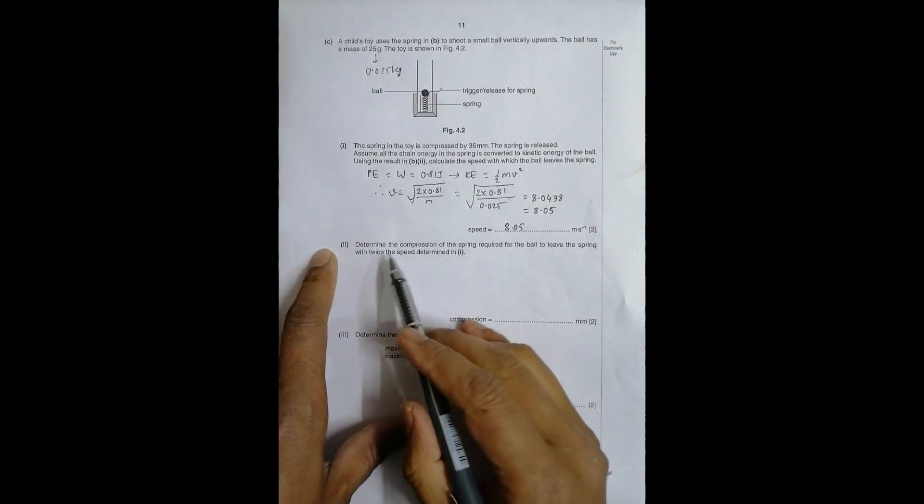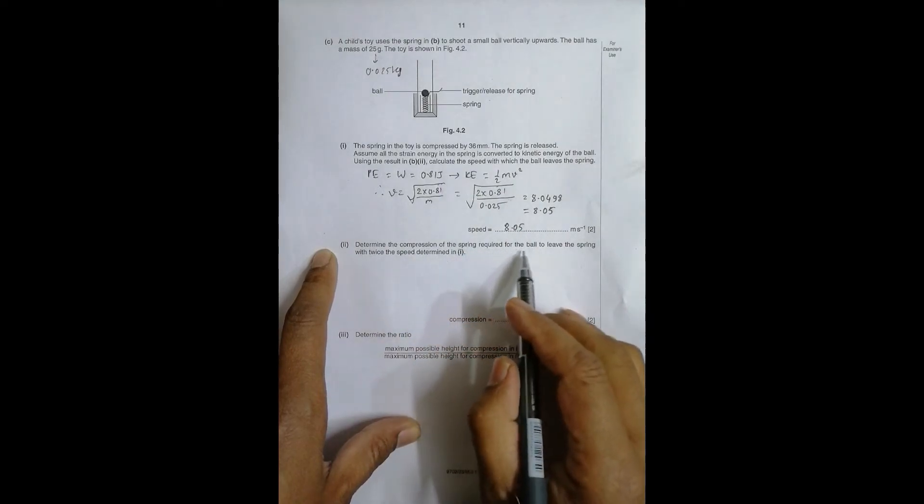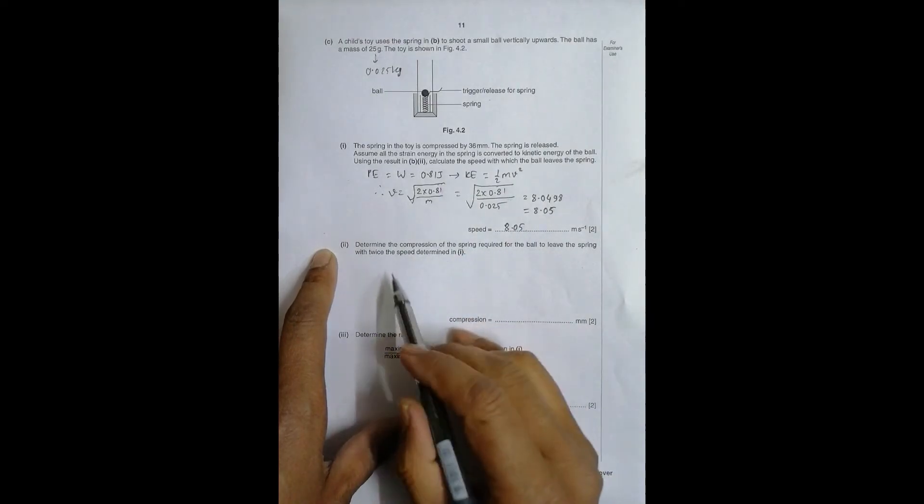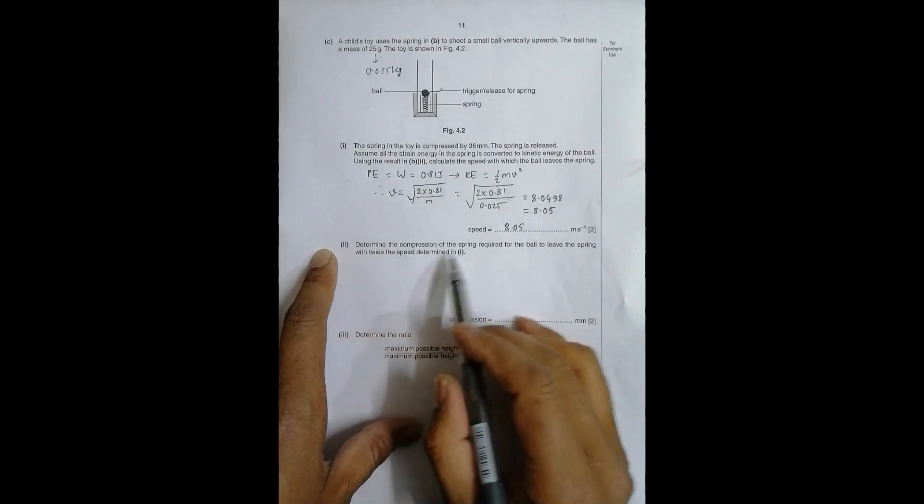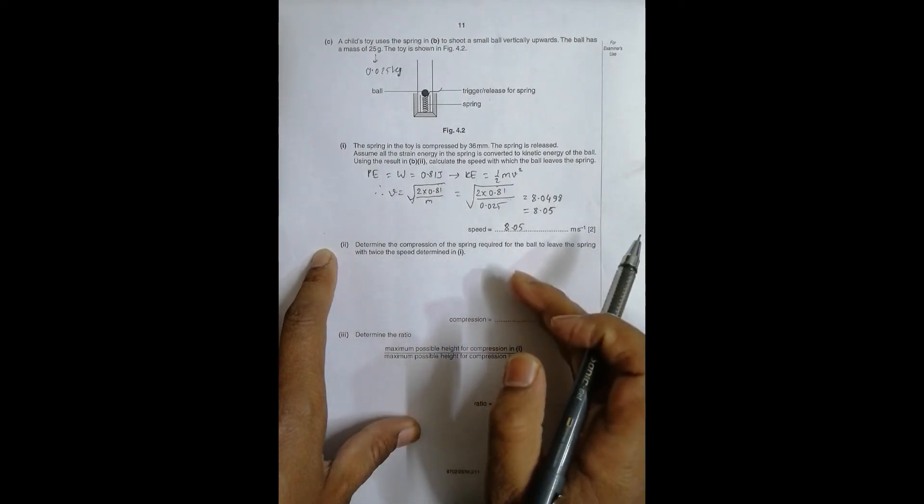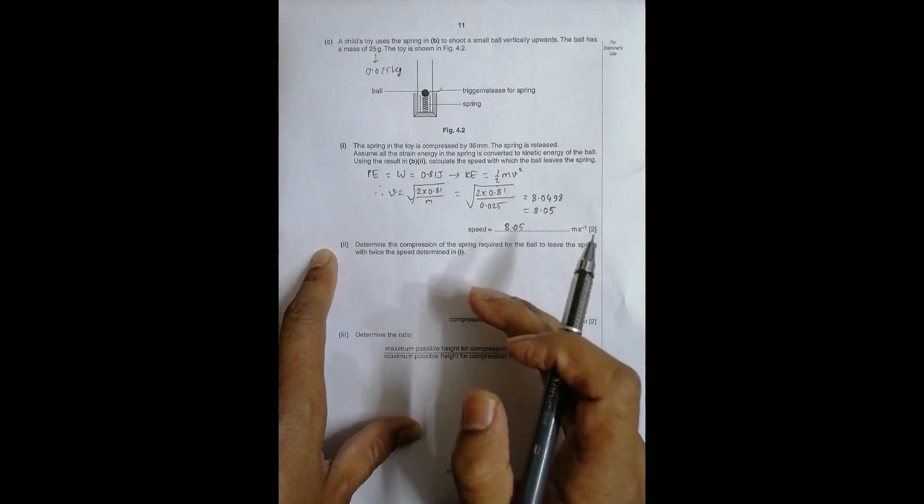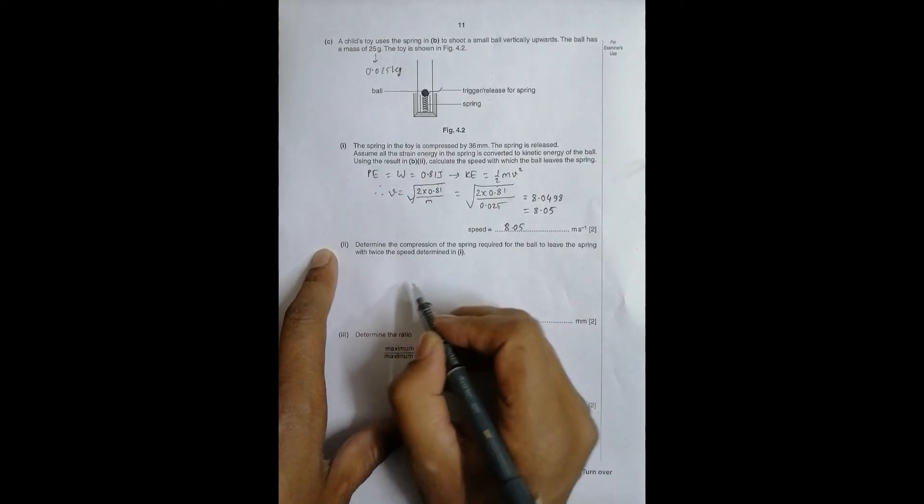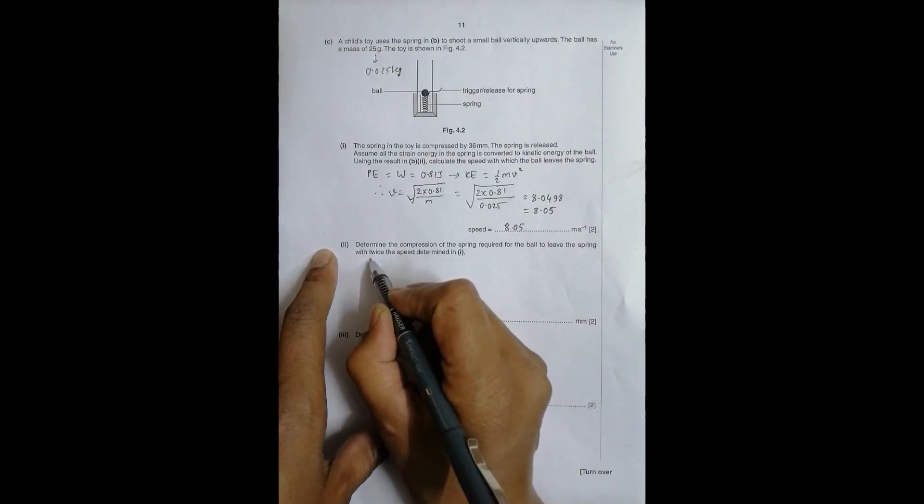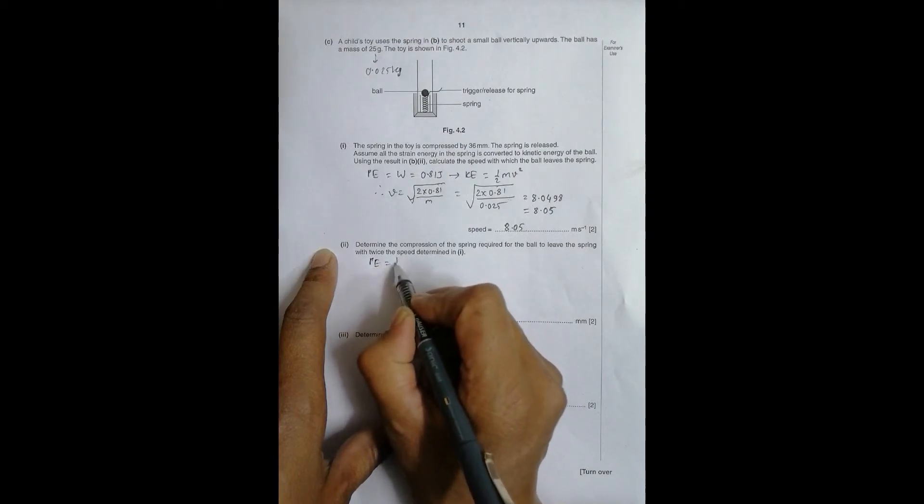Number two: determine the compression of the spring required for the ball to leave the spring with twice the speed determined here. So the speed is here, we have to make the speed twice and we have to find the compression required for that. What I have here is the PE stored there is equal to 1/2 kx^2.